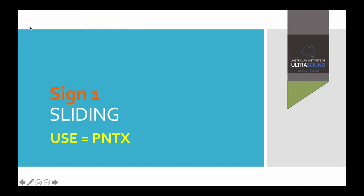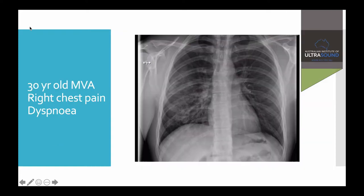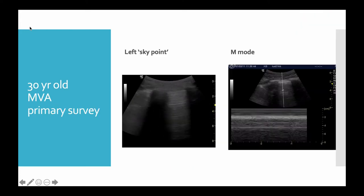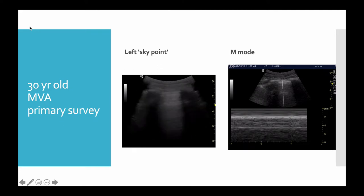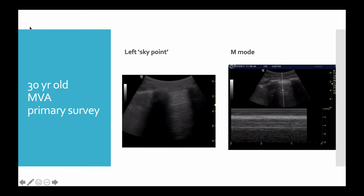The first sign we look for is sliding, and if there is sliding then you can say there is no pneumothorax at this point. Here for example is a 30-year-old man from an MVA with right-sided chest pain and dyspnea. When we put the ultrasound on, starting on the good side, you can appreciate there's a little bit of extra movement of the pleural line and the tissue below the pleural line. If we put the M-mode cursor on it, it shows that there are more ripples, wrinkles, seashells on the shore beneath the pleural line than above.